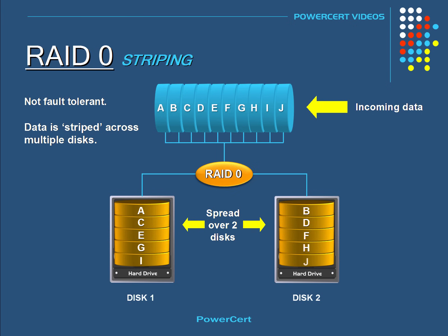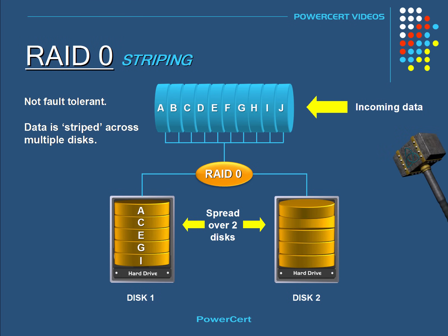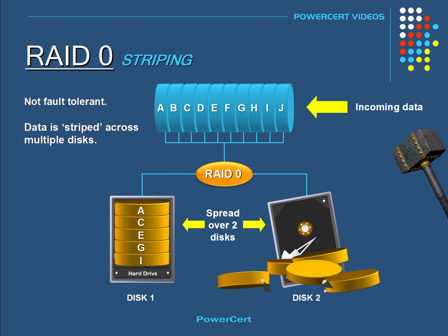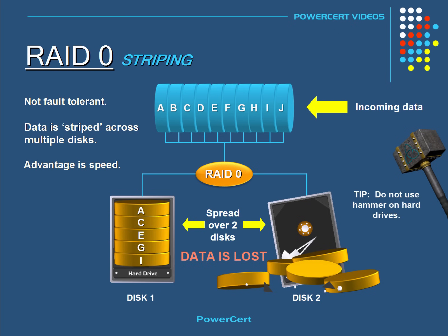So if just one of these disks fails, or if you decide to destroy it yourself with a hammer, then all the data would be lost. The only reason why you would want to use RAID 0 is speed, because when you have two disk controllers working instead of one, then accessing data is much faster.